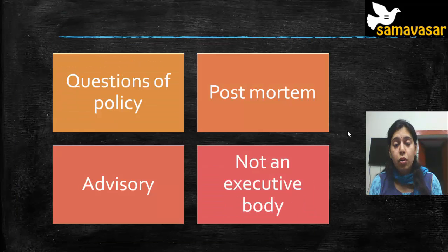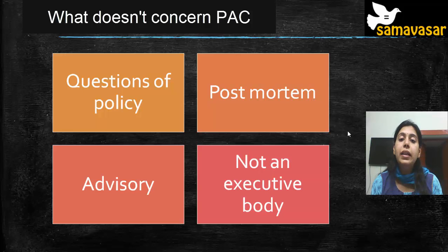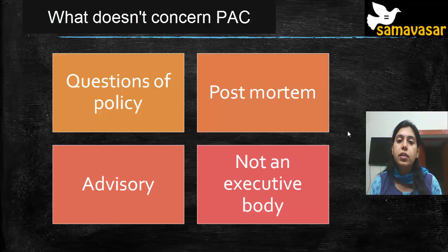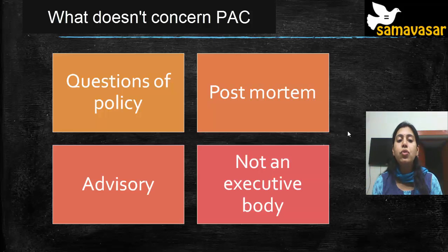The Public Accounts Committee has limitations: it cannot question matters of policy — whether a policy was right or wrong. It is only an advisory committee with no legal binding force on the government. It is a post-mortem analysis — it reports on inefficiency or loss after it has occurred, not in advance. And it is not an executive body, so it cannot issue orders.